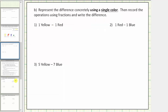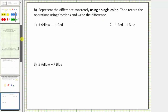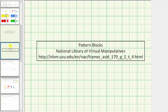For Part B, we're asked to represent the difference concretely using a single color, then record the operations using fractions and write the difference. We'll complete this activity using the online pattern blocks from the National Library of Virtual Manipulatives.